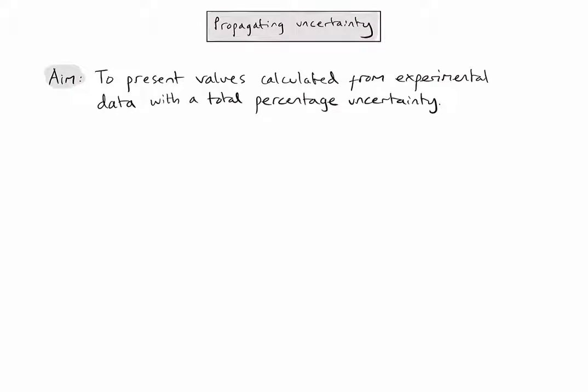The word propagating means to follow through. So when we're talking about propagating uncertainty, we want to present any values that we calculate from experimental data with a total percentage uncertainty.